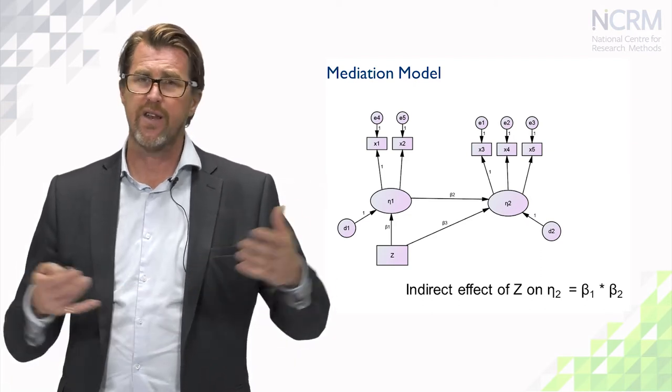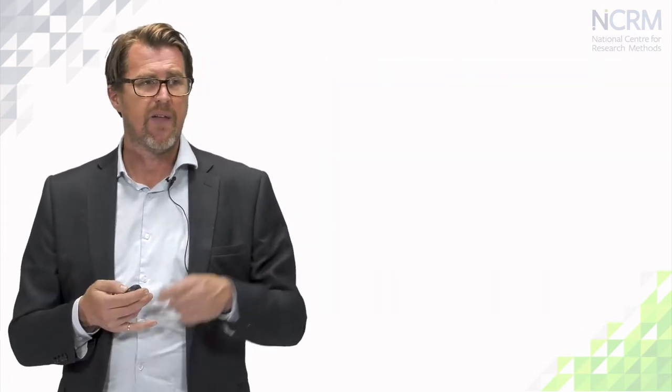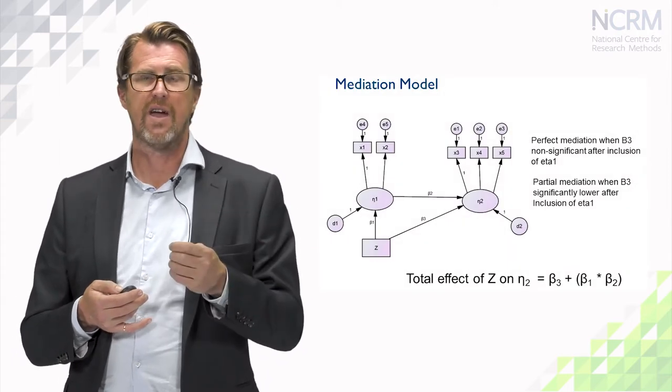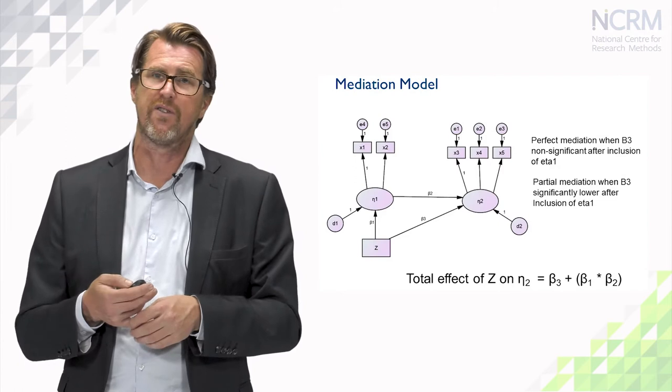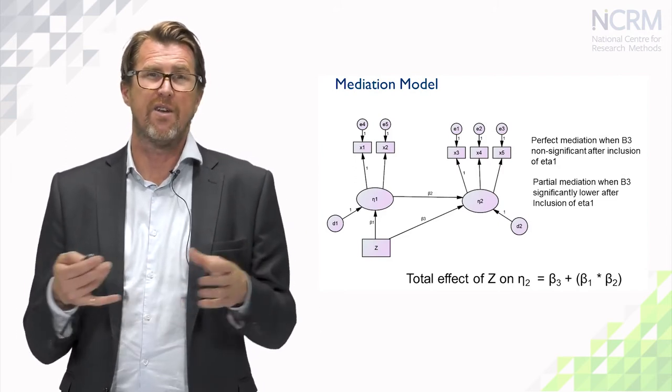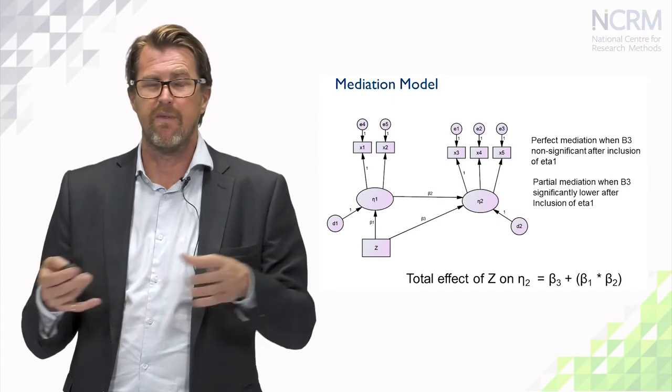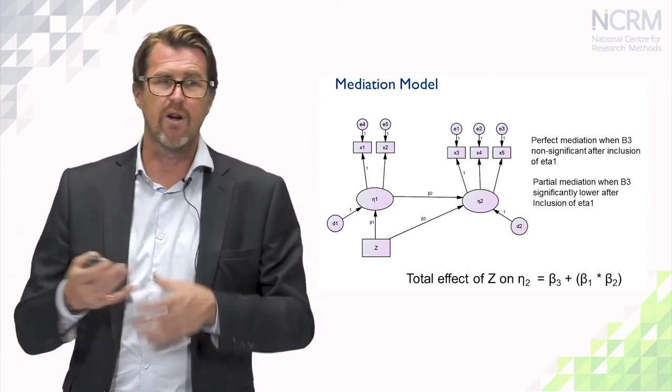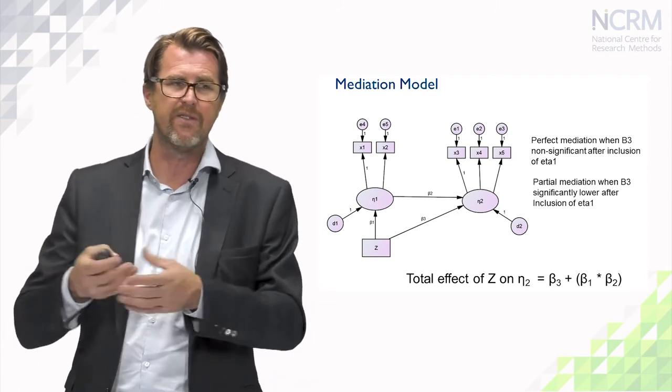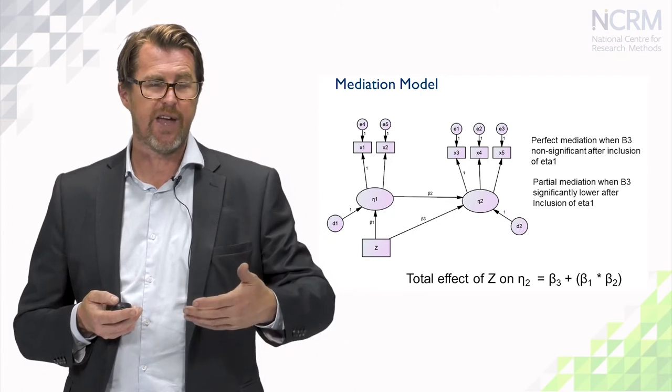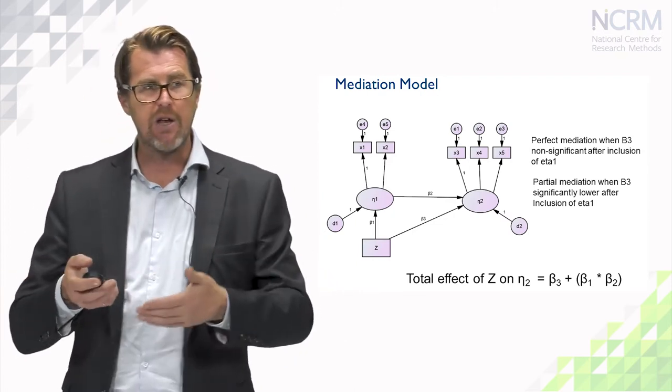And then we will perhaps be interested in the total effect. And this is the sum of the indirect and the direct effect. So we might find, for example, that both direct and indirect effects are non-significant, but there is still a significant total effect. So we can get different patterns of and understandings of an effect of one variable on another by looking at these different effect parameters.